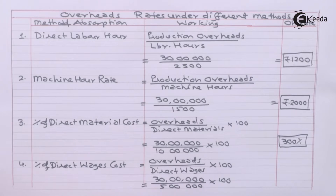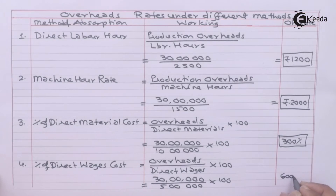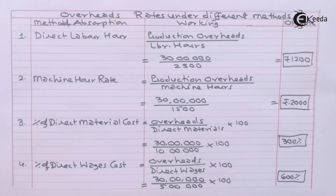For the direct labor cost percentage method: overheads 30 lakhs divided by direct wages 5 lakhs multiplied by 100 gives 600 percent.